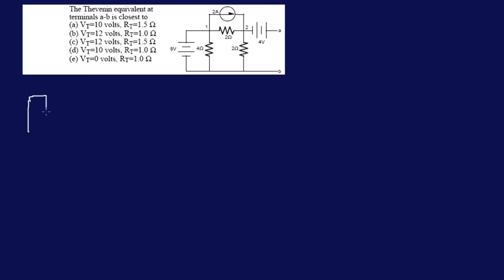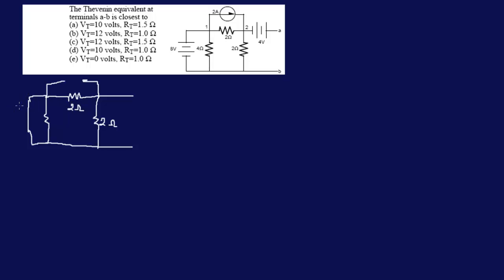So let's see what our circuit looks like when we do that. We short the 8-volt source and we have the 4-volt source, and we have an open circuit where the current source was. We have 2 ohms here and 2 ohms here. If we short circuit the 8 volts, the voltage across the 4-ohm is also 8 volts — that's like shorting the 4-ohm, so it goes away. We don't have the 4-ohm anymore.